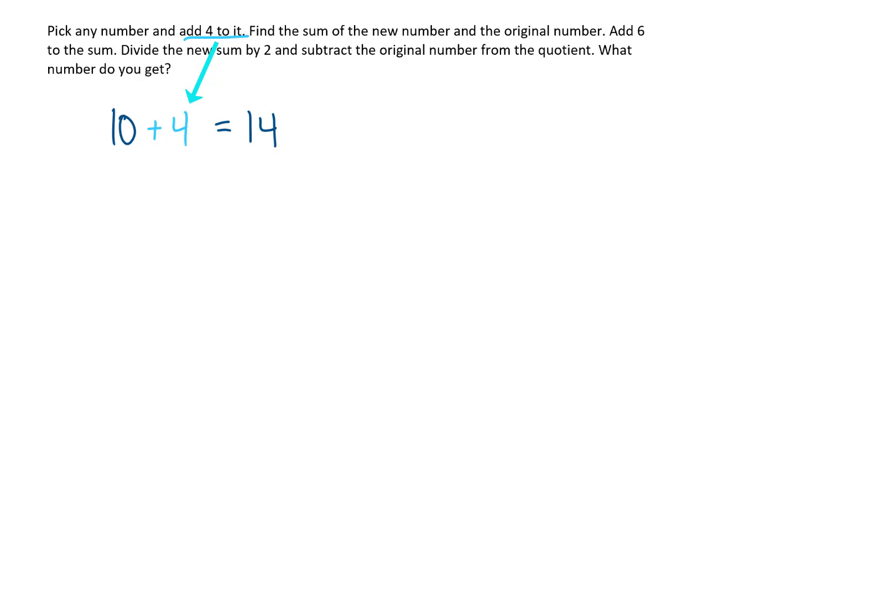Then we're going to find the sum of the new number and the original number. Our new number is 14, our original number was 10, so now my number is 24. Then we're going to add 6 to that sum, so now I'm at 30. And we're going to divide this new sum by 2, that gives me 15. And we're going to subtract the original number from that quotient. Subtracting my original number of 10 gives me a final answer of 5.